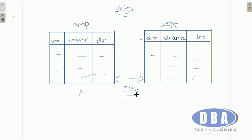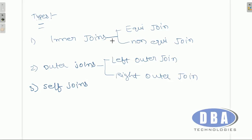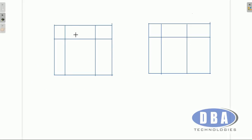So we use joins to combine two or more tables in order to retrieve the data. Now let us see the types of joins. There are three types: inner joins, outer joins, and self joins. Inner joins are of two types: equi join and non-equi join. Outer joins are of two types: left outer join and right outer join. And there is one more type called self join.